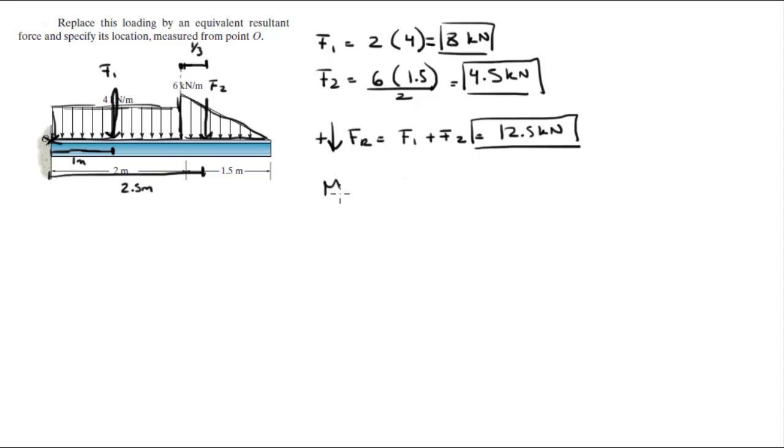So let's find the moments about O. You got F1 turning the lever arm with length of 1 meter, so it's F1 times 1 meter. Let's assume clockwise is positive. So it's positive, and F2 is also positive because it's also turning it clockwise, and it's turning the lever arm with a length of 2.5 meters. When you plug F1 and F2, which we found up here, into this formula, you get that the moment is equal to 19.25 kilonewtons per meter.